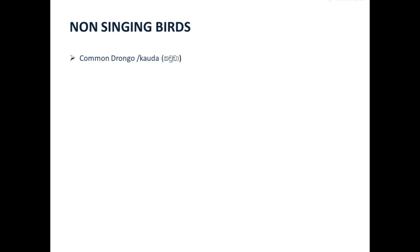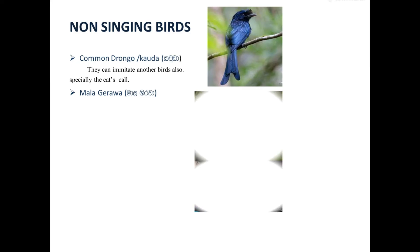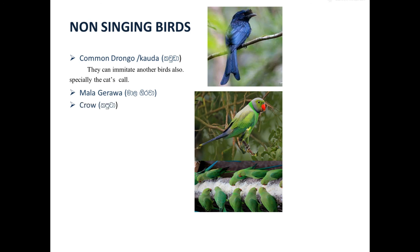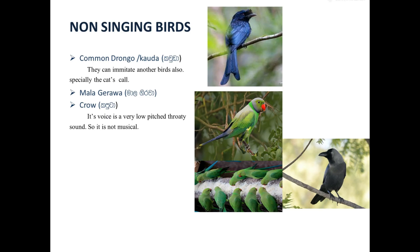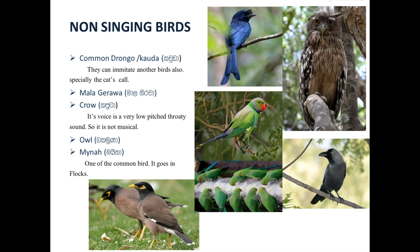Non-singing birds. Common Drongo, or Kauda — they can imitate another bird's call, especially the cat's call. Malagirava. Crow, Kaputa — its voice is very low-pitched and throaty, so it is not musical. Owl, Bakamuna. Miner — one of the common birds, it goes in flocks. Sometimes the miner belongs to the singing birds because it goes in flocks.